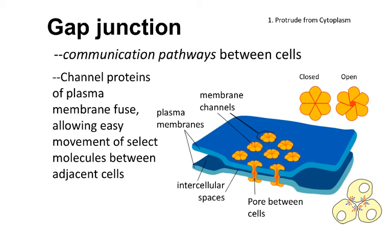Last but certainly not least, we have gap junctions. Gap junctions allow for direct cell-to-cell communication. The two cell membranes — shown as two-tone blue with the space between them marked as intercellular space — these proteins essentially form a pore between one cell and the next. And what that does is allow the rapid passage of ions from one cell to the next. That is absolutely critical in certain parts of the nervous system and also in cardiac muscle, the muscle in our hearts.